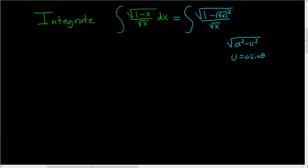In this case, a is 1, because we can think of 1 as 1 squared. So our u is going to be the square root of x. Our a is 1 — there's a 1 there — and then we just have the sine of theta.